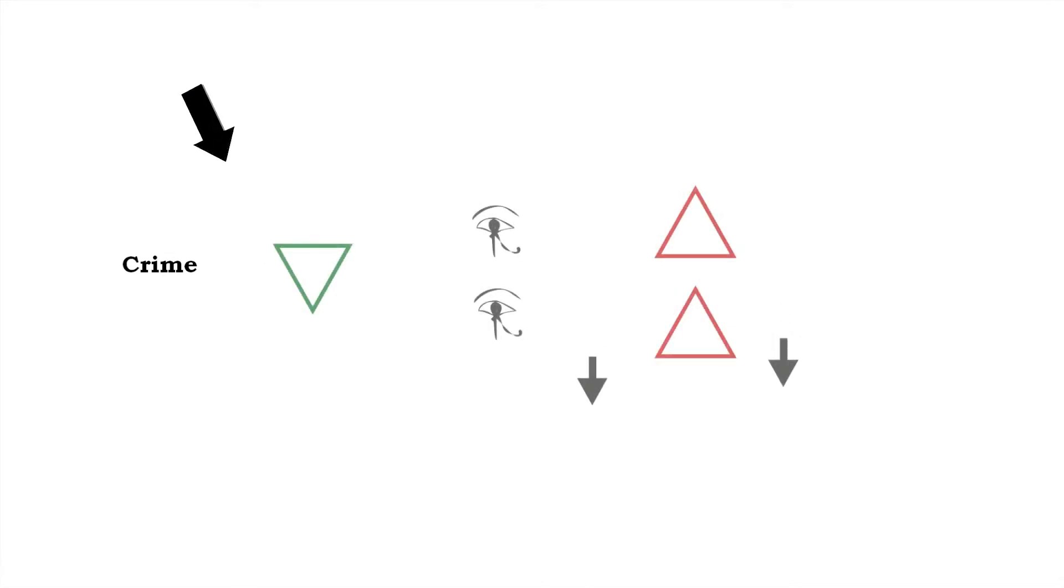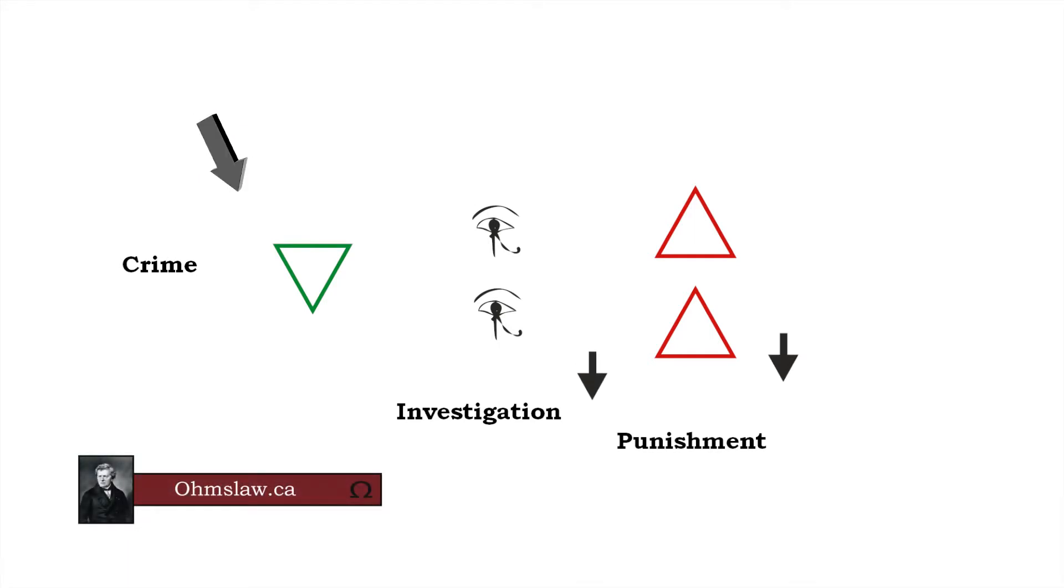If crime is constant and there is no investigation, no one will be punished. Society is spiraling downward into anarchy.